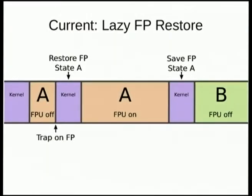The kernel decides it wants to run A, and A starts with the floating point unit off. In this diagram, A is a floating point intensive task and B is non-floating point. A runs along with the floating point unit off, then it wants to run a floating point instruction — but because the floating point unit is off, it traps into the kernel. The kernel restores A's state from memory into the floating point unit, turns the floating point unit on, and A continues on until it ends its time slice.